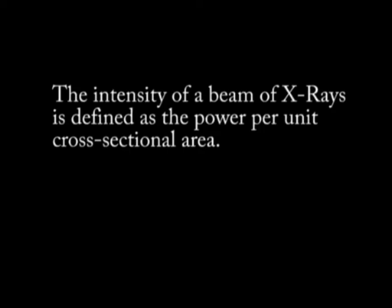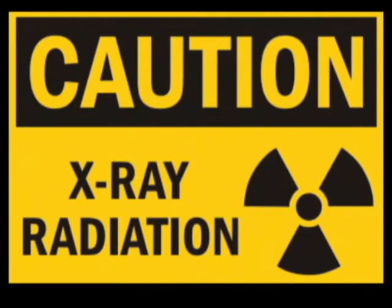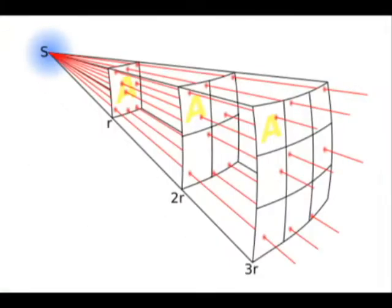The intensity of a beam of X-rays is defined as the power per unit cross-sectional area. X-ray radiation from a normal source obeys the inverse square law, where the intensity of the radiation decreases the further away it gets from the source. However, the beam of radiation may be collimated, meaning that its intensity remains constant no matter how far away it is from the source.